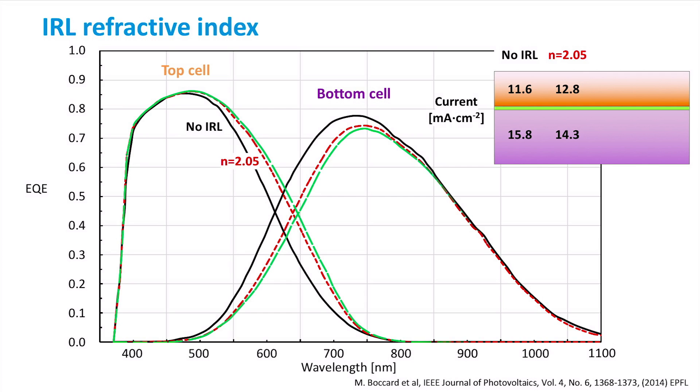If the intermediate reflective layer has a refractive index of 1.95, yet more of the current is transferred from the bottom to the top cell. At a refractive index of 1.75, the top cell has a higher current output of 13.6 mA per square centimeter than the bottom cell at 13.2 mA per square centimeter. The optimal refractive index for this intermediate reflective layer is therefore somewhere between 1.75 and 1.95.